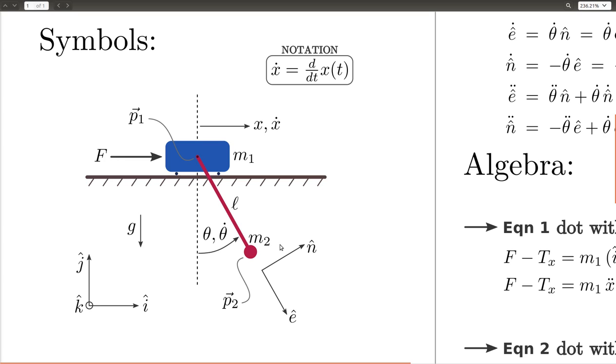We also have what's called a body reference frame. You can think of this as a unit vector that's pinned to the pendulum. So e hat is the direction from this point out along the rod towards this point. Since it's a unit vector, it has a magnitude of 1, and it really just gives a direction.